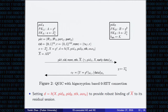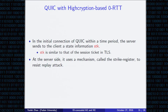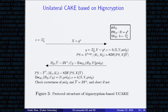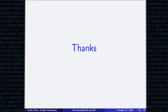Here is a QUIC protocol with HICE-based zero RTT connection. To defend against replay attacks, QUIC uses a mechanism named the strike register, and we set it up this way to provide a robust body. This gives a unilateral identity-concealed key exchange — the key exchange component being HICE — which is very simple. For the security definition and analysis, please refer to the paper.